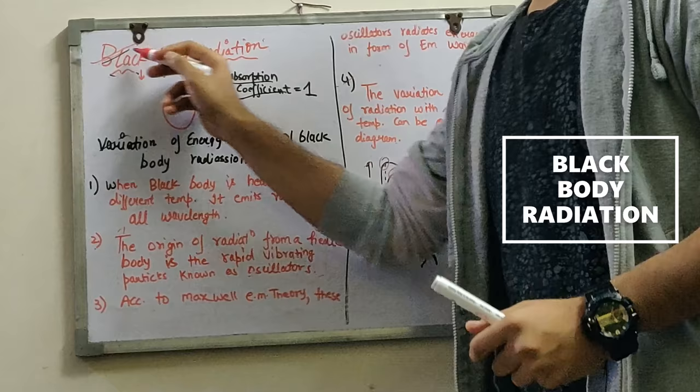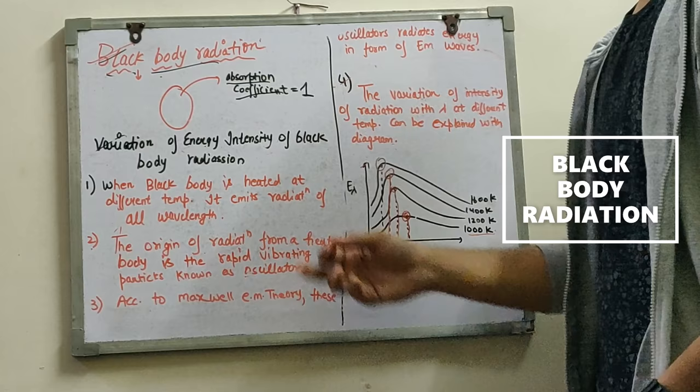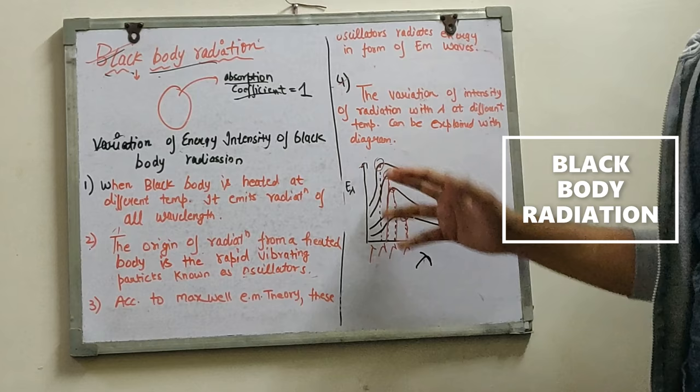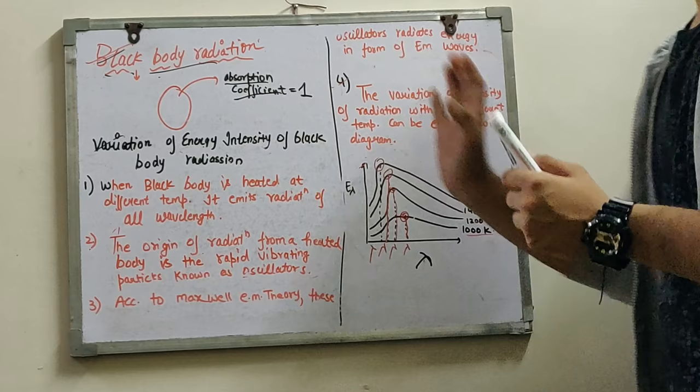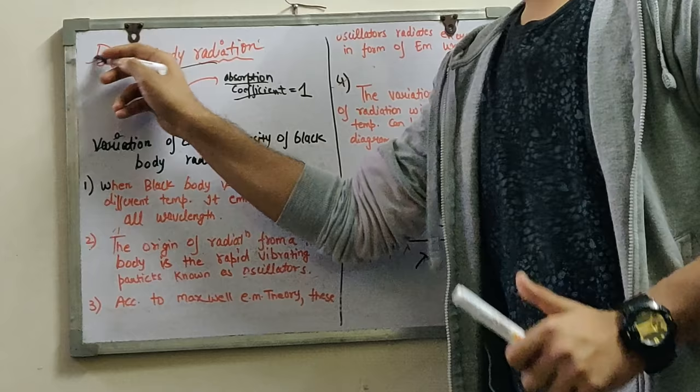Hi guys, welcome back to my YouTube channel. In today's video, we will see what is black body radiation, then the absorption coefficient of black body radiation, then the variation of energy intensity of black body radiation in which we will see 4 points. The 4th point will be the most important point, and we will see the graph based on its conclusions.